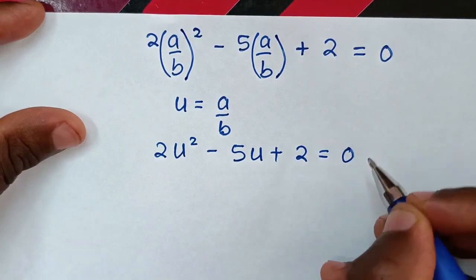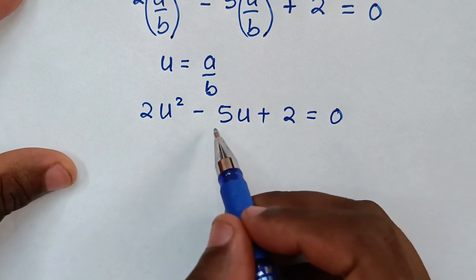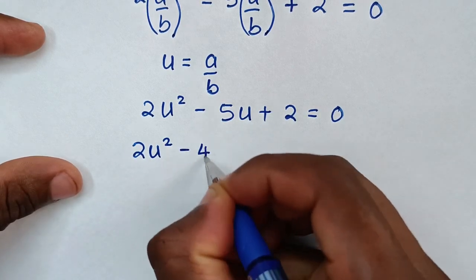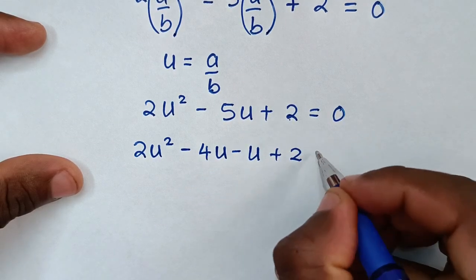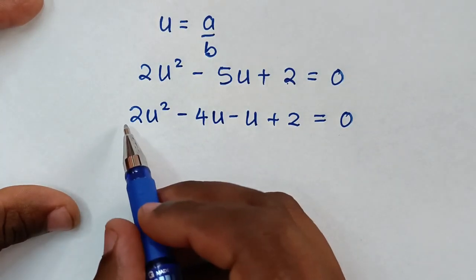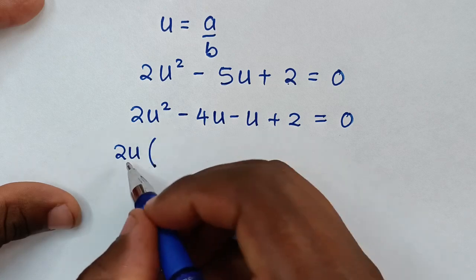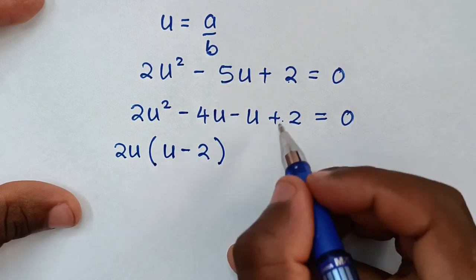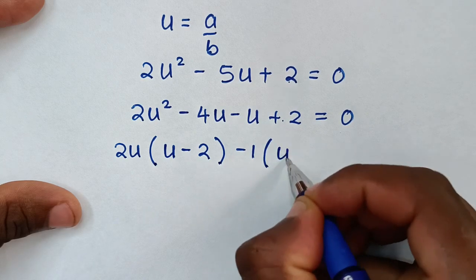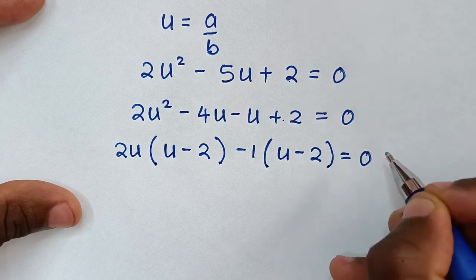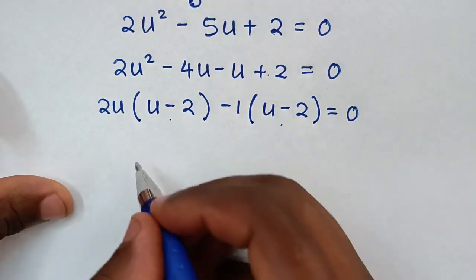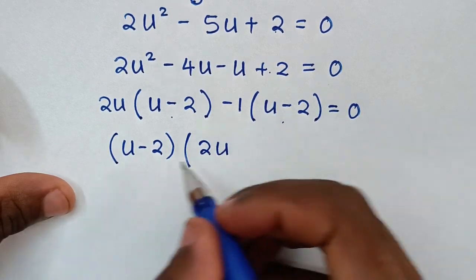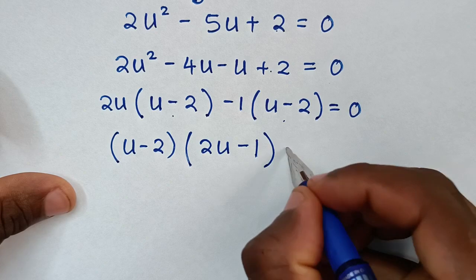We solve by grouping and factorization: 2u^2 - 4u - u + 2 = 0. Taking 2u common from the first pair: 2u(u - 2), and -1 common from the second pair: -1(u - 2). So (u - 2)(2u - 1) = 0.